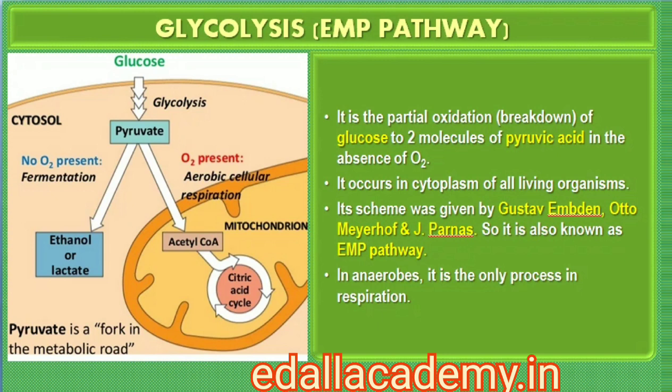The term glycolysis has originated from the Greek words — glycos for sugar and lysis for splitting. The scheme of glycolysis was given by Gustav Embden, Otto Meyerhoff, and J. Parnas, and is often referred to as the EMP pathway. In anaerobic organisms, it is the only process in respiration. Glycolysis occurs in the cytoplasm of the cell and is present in all living organisms. In this process, glucose undergoes partial oxidation to form two molecules of pyruvic acid.